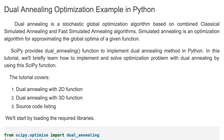Dual annealing is a stochastic global optimization algorithm based on combined classical simulated annealing and fast simulated annealing algorithms. Simulated annealing is a probabilistic optimization technique inspired by the annealing process in metallurgy, where materials are heated and then gradually cooled to remove defects and minimize energy. It is an optimization algorithm for approximating the global optimum of a given function.